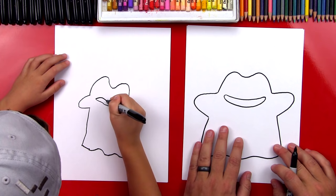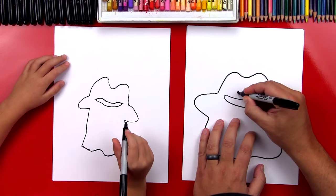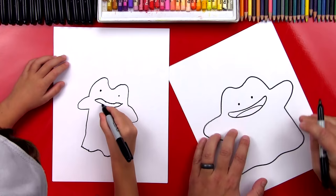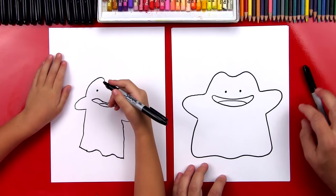Now he's missing his eyes. Let's draw two little eyes. They're really small. And then we could also draw his tongue. Let's draw his tongue inside of his mouth. Okay, we did it. We finished drawing Ditto. And he turned out awesome.